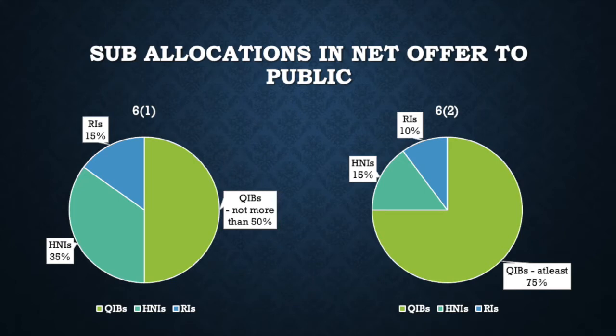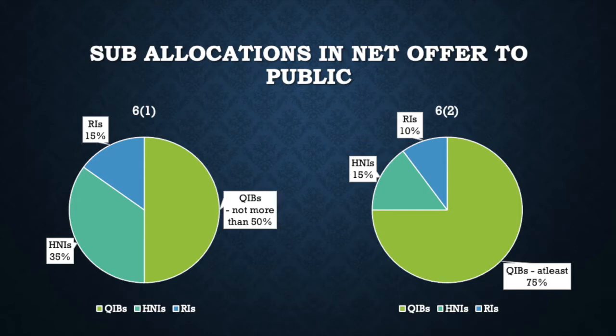This sub-allocation depends upon whether the company is doing an IPO through the 6-1 or the 6-2 route — through the performance route or the market route. If a company is going through the performance route, then not more than 50% of the net offer to public shall be offered to QIBs. From the remaining 50%, HNIs or non-institutional investors get 35% and retail investors get 15% allocation.